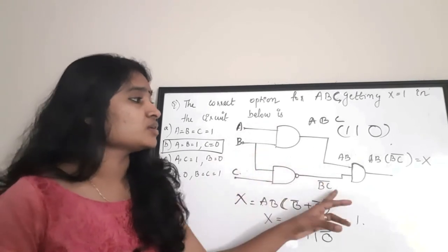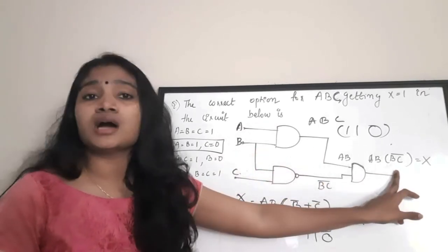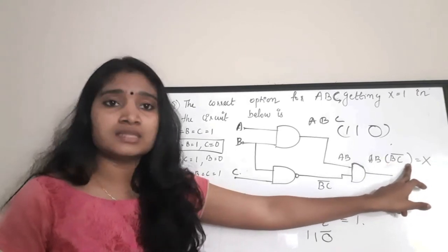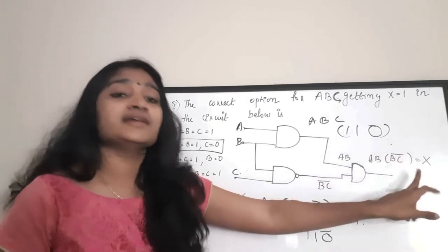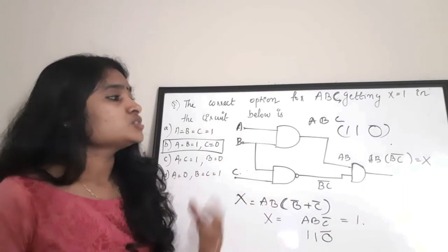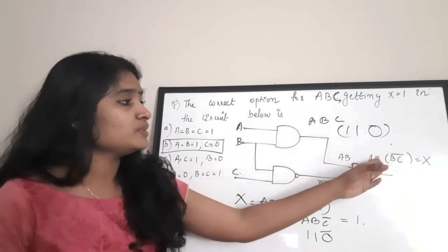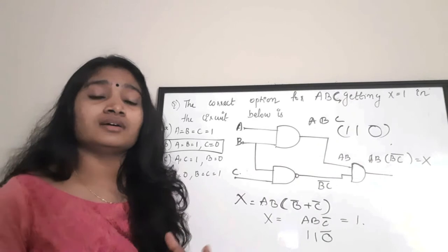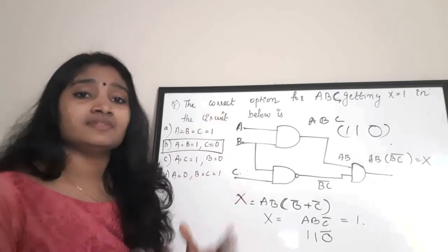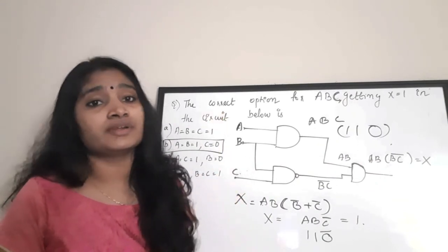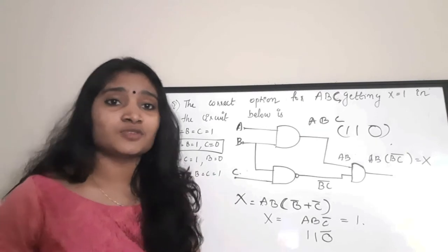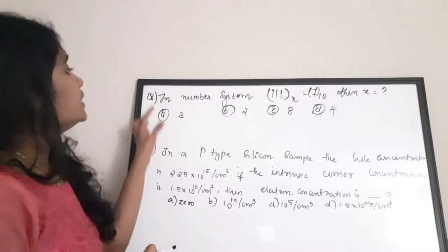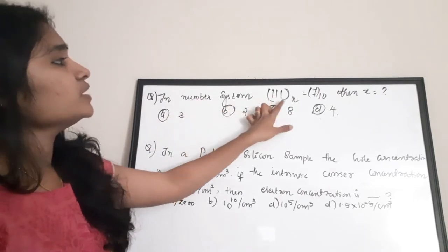If you see such a circuit, don't overthink the connections — just look at the output expression. Simplify the expression and relate it to the options given to find which combination gives you a 1. The correct answer for this question is option B.